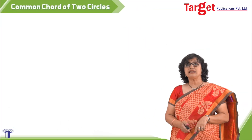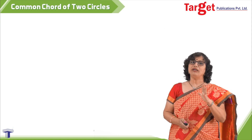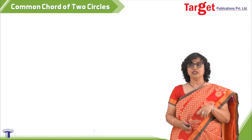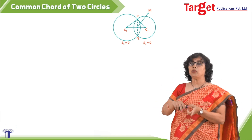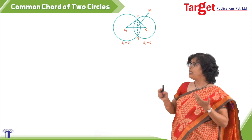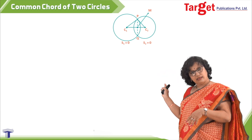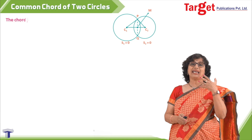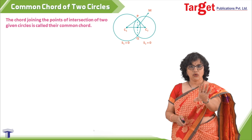Now let us talk about the common chord of two circles. A chord is common to both circles when two circles intersect at points p and q. I take the equation of one circle as s1 equal to 0 and the other as s2 equal to 0 with centers c1 and c2. The segment pq is the common chord. The chord joining the points of intersection of two given circles is called their common chord.